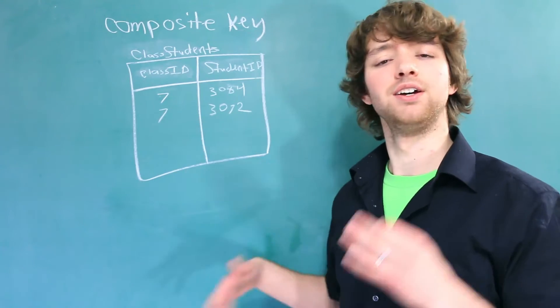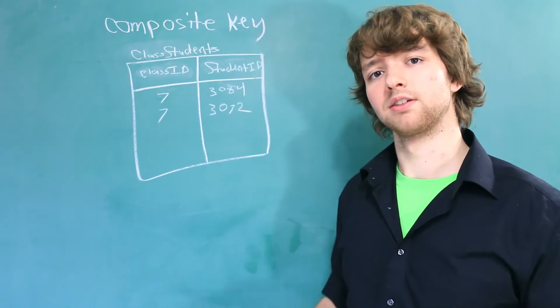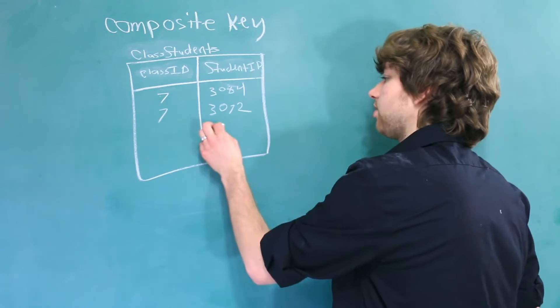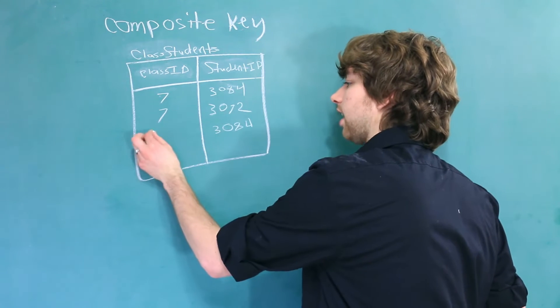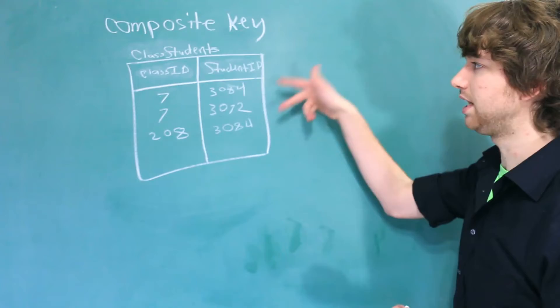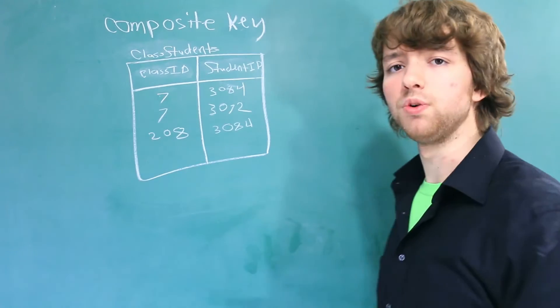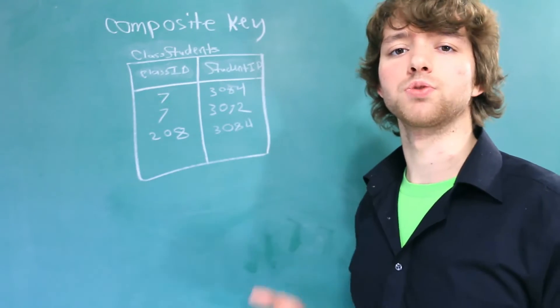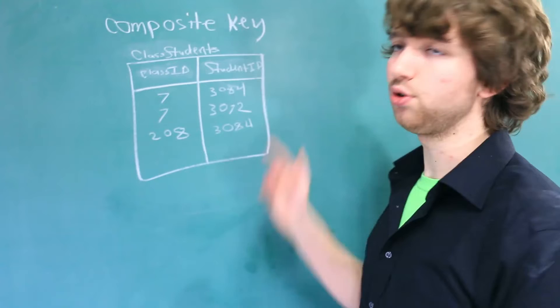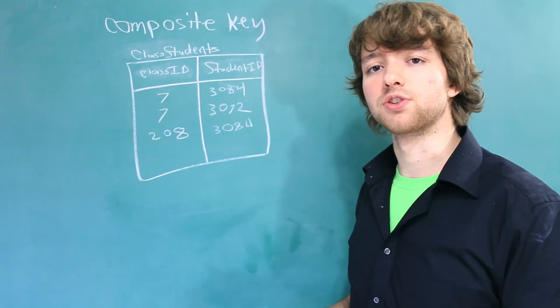So what about the student ID? Let's think about the same thing. Can a student take multiple classes? Yes. So that means we might have this student again, 3084, but this time taking a different class. Now we have repeating student IDs. So if I said, grab the row with the student ID of 3084, you wouldn't know which row to grab. So the student ID also will not qualify as the primary key.